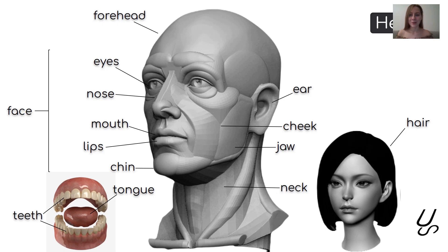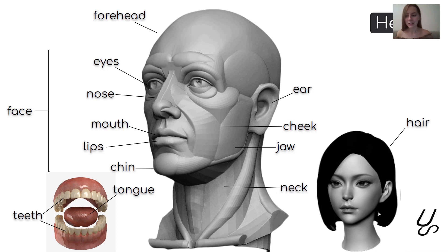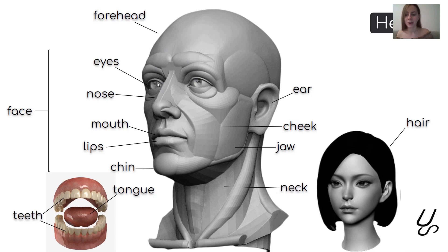First of all, we'll talk about the head. We know that inside the head is the brain, which is responsible for thinking. The top of a person's head is covered with hair, and beneath the hairline we can see the forehead. Underneath the forehead, if we look at this picture, we can see our eyes — eyes are for seeing. We can also see the nose, which is responsible for smelling.